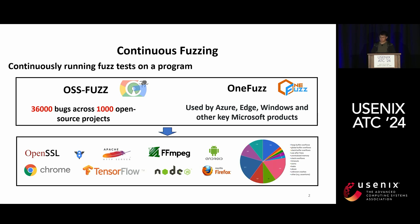Continuous fuzzing is a security testing methodology that involves continuously and automatically testing software applications for vulnerabilities using fuzzing techniques. It is practical and effective: Google's OSS-Fuzz has found 36,000 bugs across 1,000 open source projects, and WinFuzz is a continuous fuzzing platform for Microsoft used across its key products. Many popular function libraries and programs have had serious bugs found, including memory safety bugs such as buffer overflow or undefined behaviors, as well as timeouts.